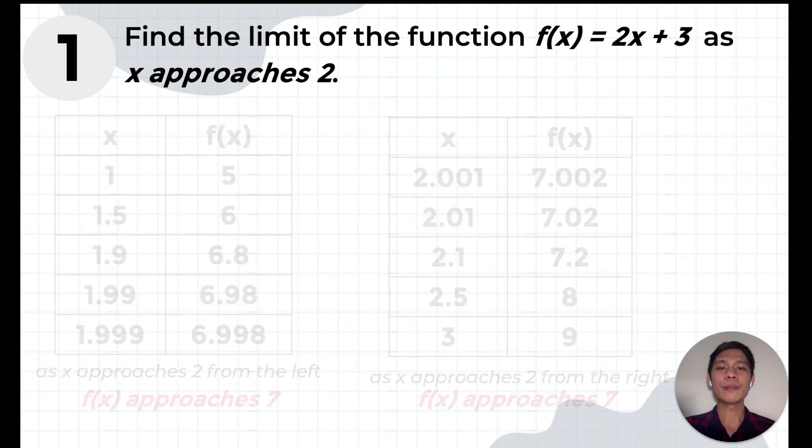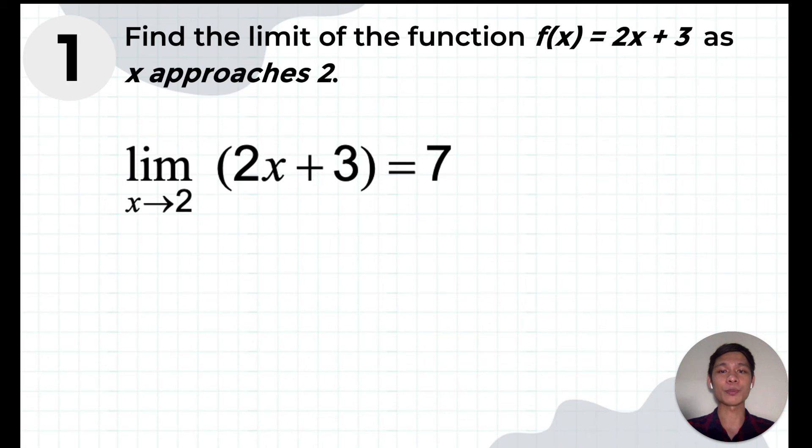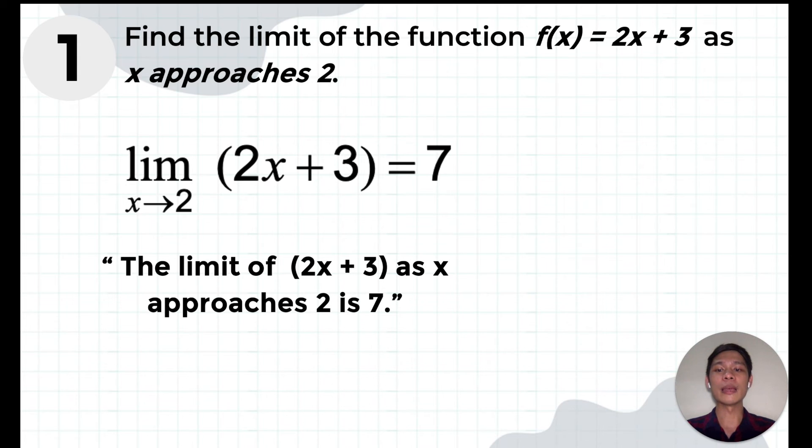Now, please take note of the proper way of writing the statement in symbols. We write LIM, which stands for the limit of, then followed by the given function, which is for this example, we have 2X plus 3. Then below LIM, we put X arrow 2, which means X approaches 2. And finally, we write equal sign and then the limit of the given function, which is 7. And how do we read this again? The limit of 2X plus 3 as X approaches 2 is 7.